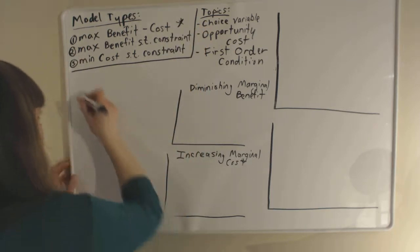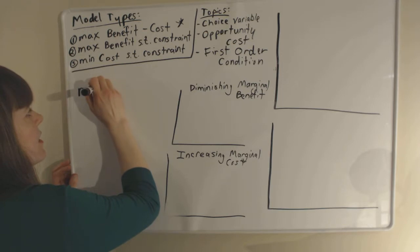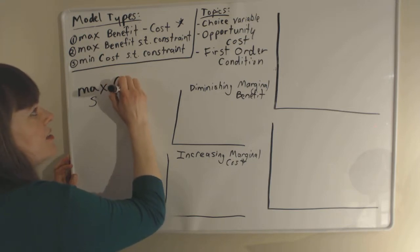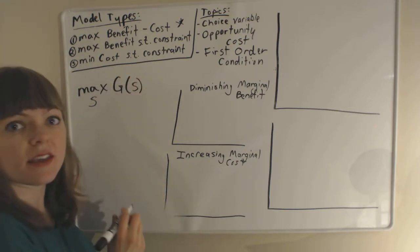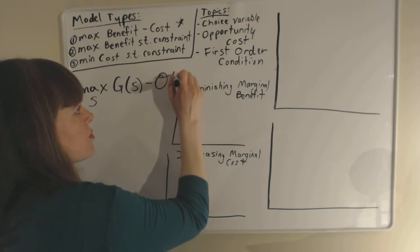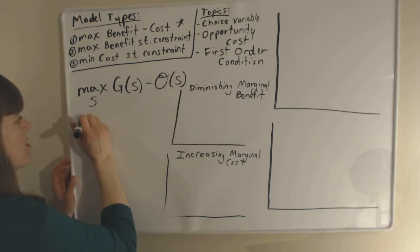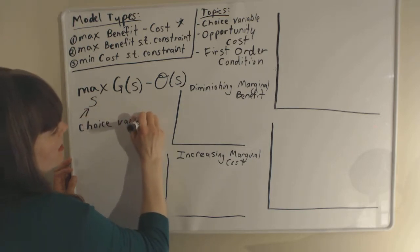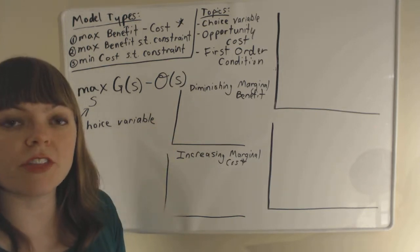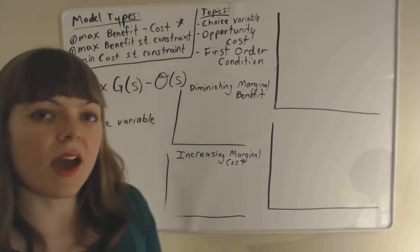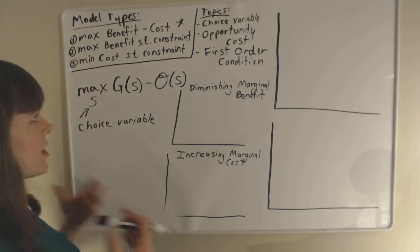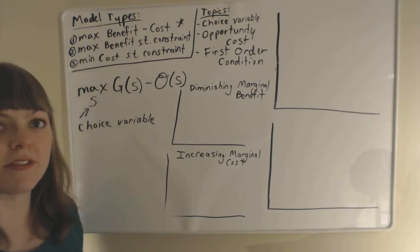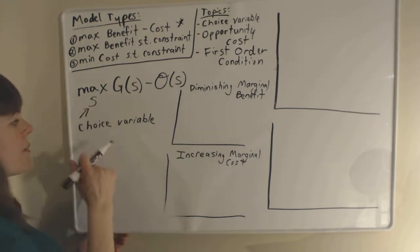The model we're going to look at has someone maximizing — by choosing the time they spend studying — their grades, which is a function of time spent studying, minus their opportunity cost, which is also a function of time spent studying. Studying is our choice variable, meaning the student has control over it. All models involve human decision making, and the decision maker is whoever controls the choice variable — in this case, the student who chooses time spent studying.